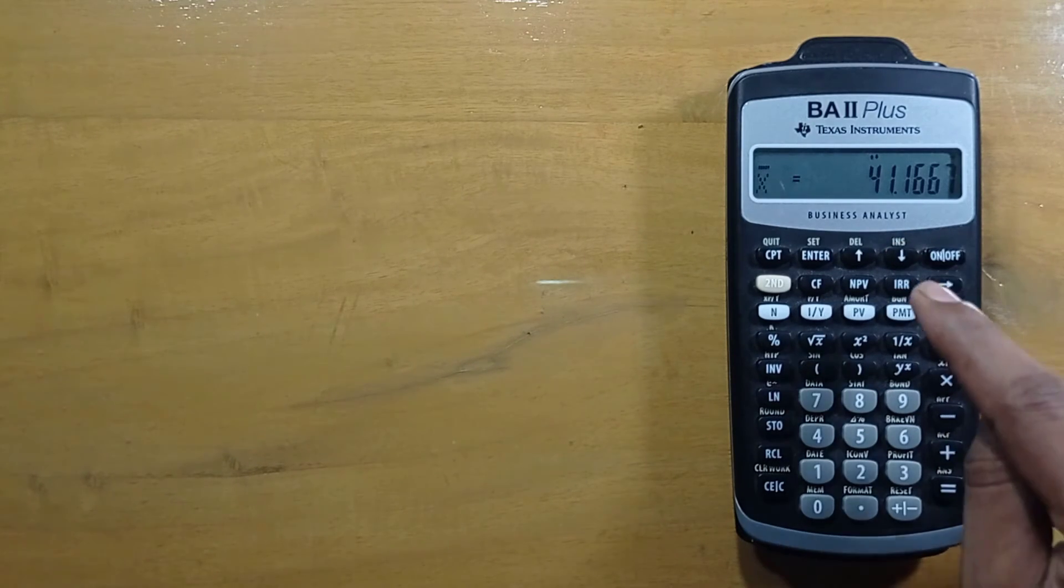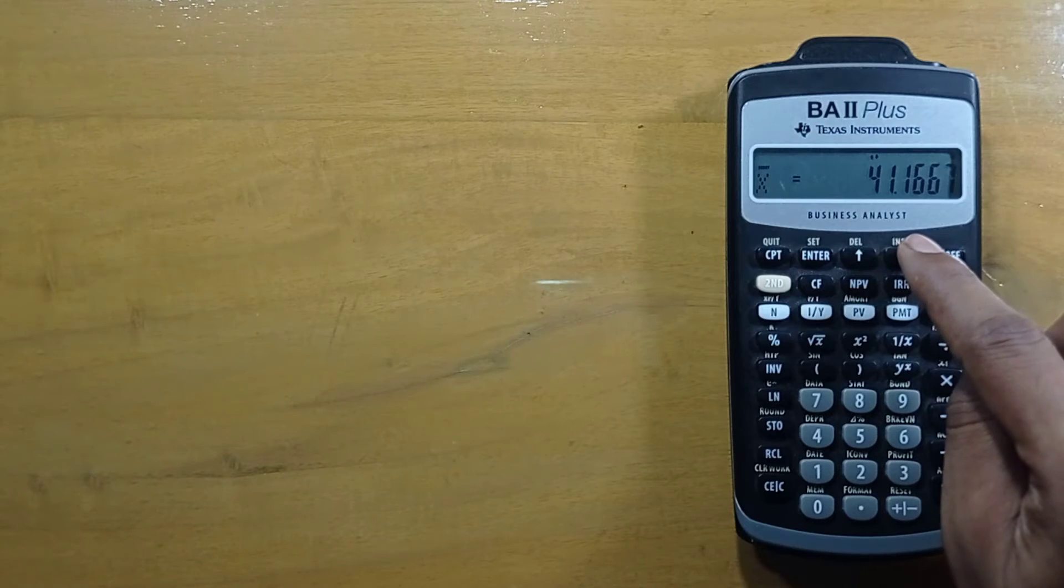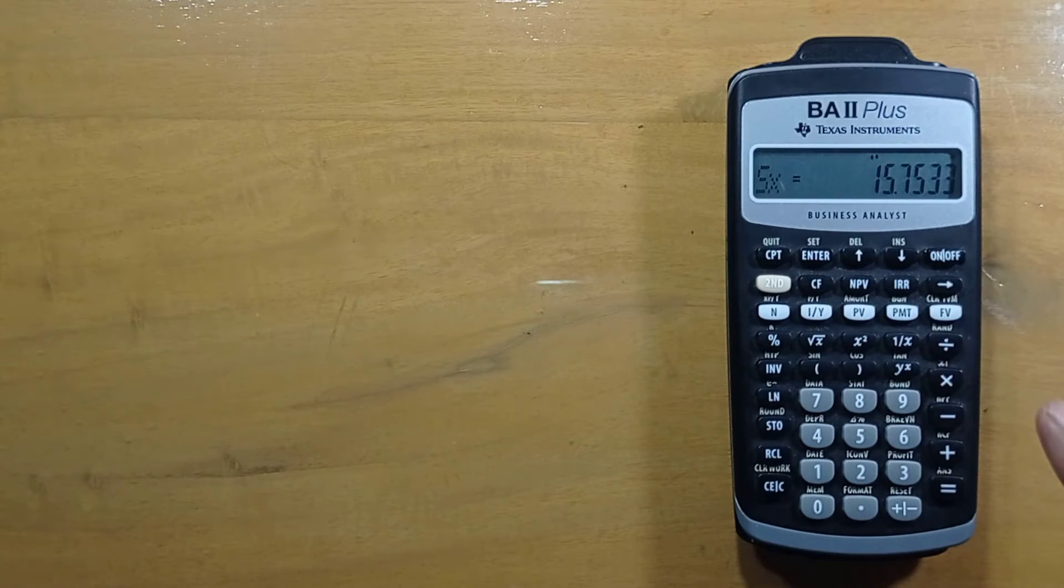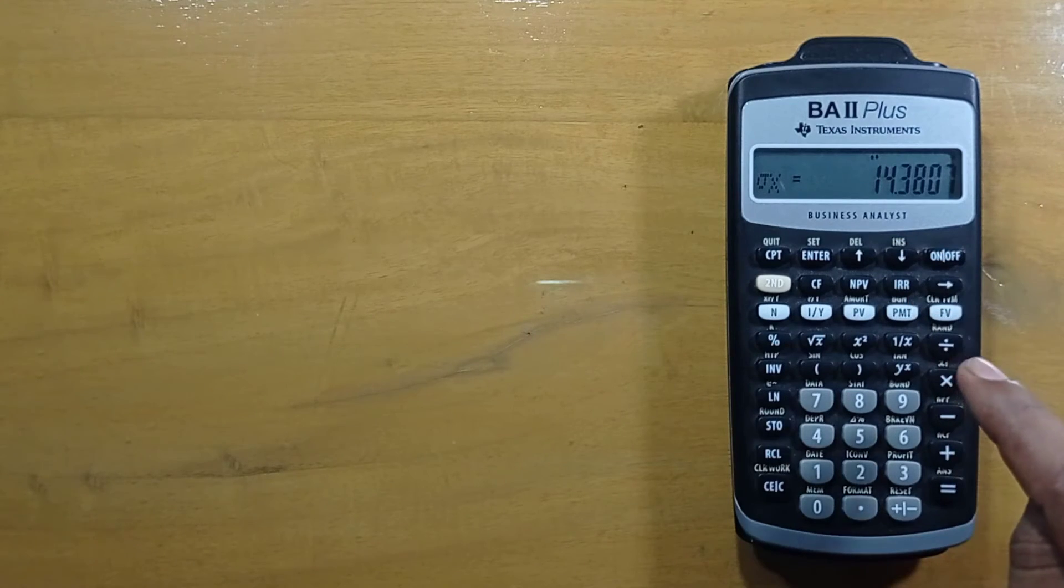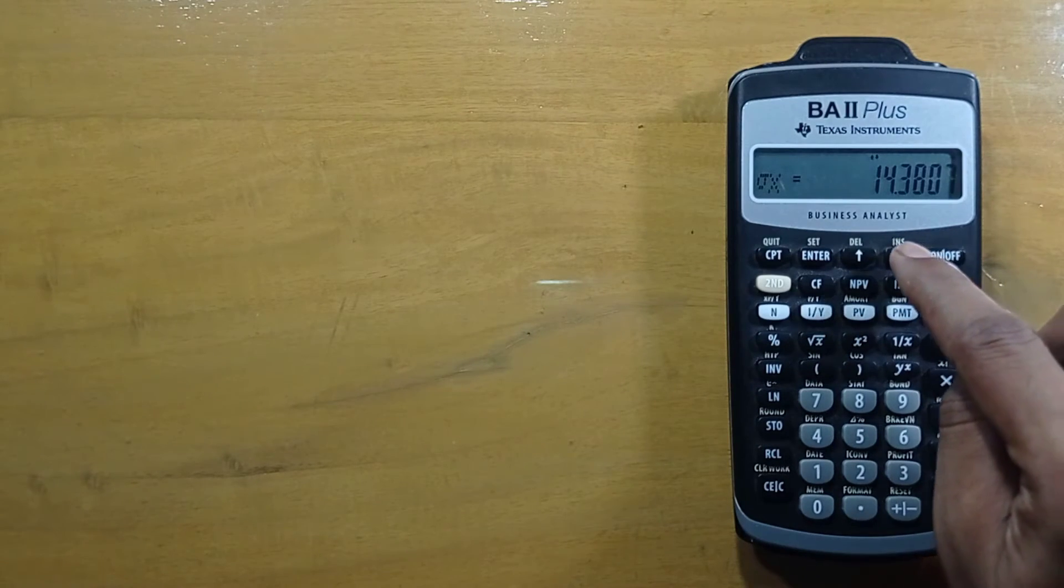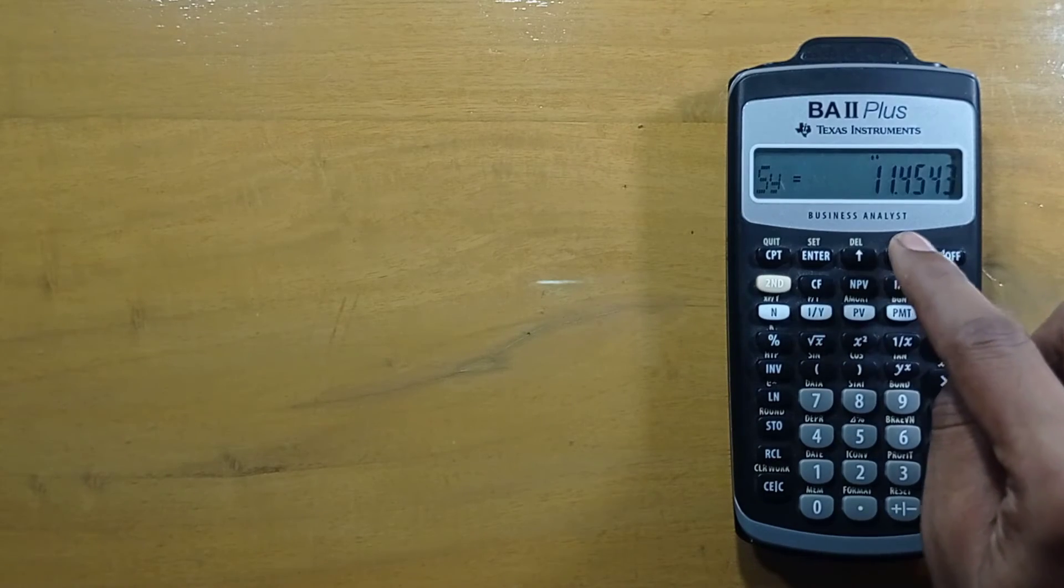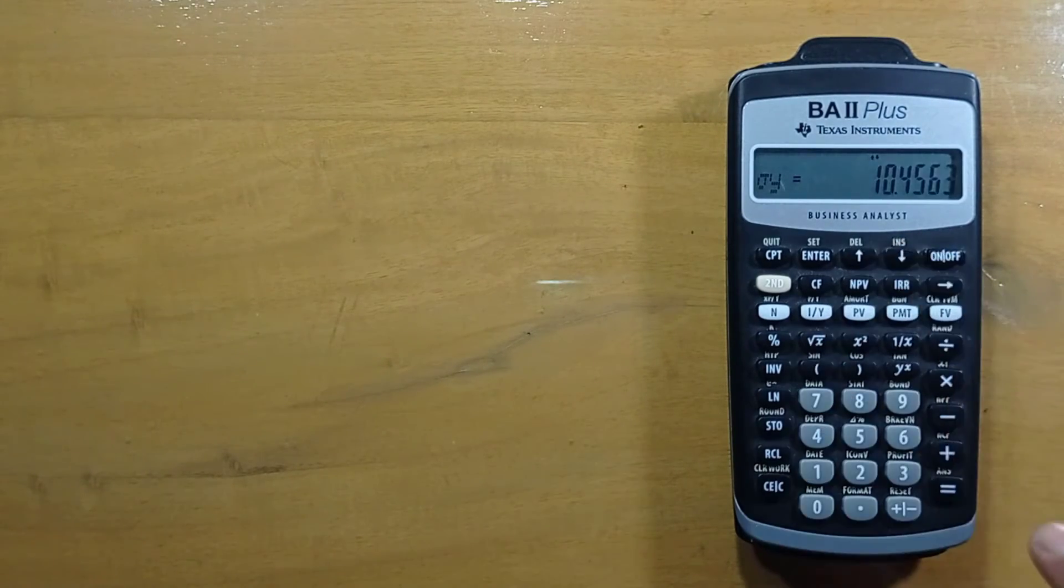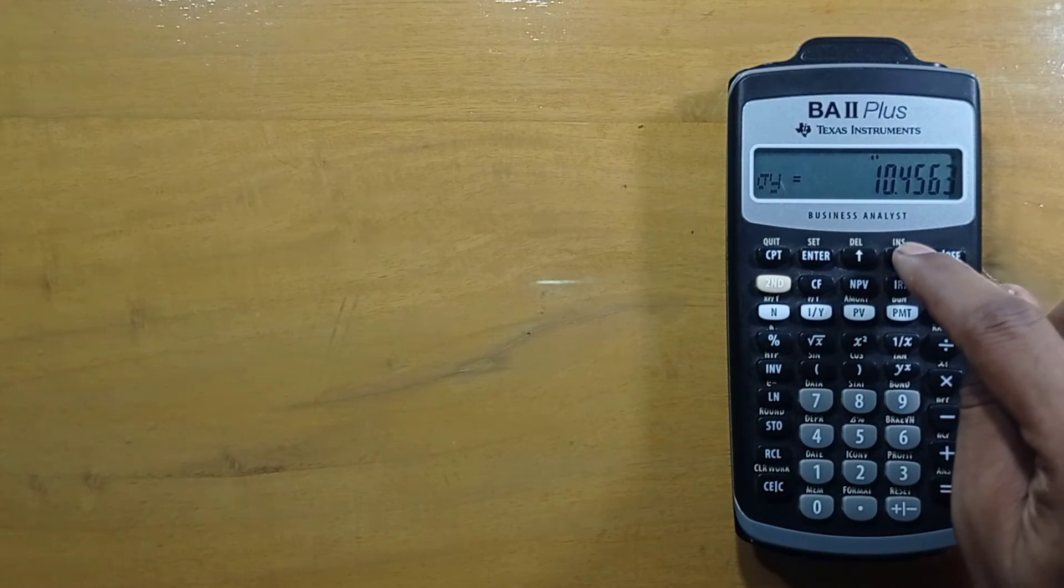This is x-mean which is 41.1667. This is sample standard deviation of x, population standard deviation of x, y-mean, sample standard deviation of y, population standard deviation of y.